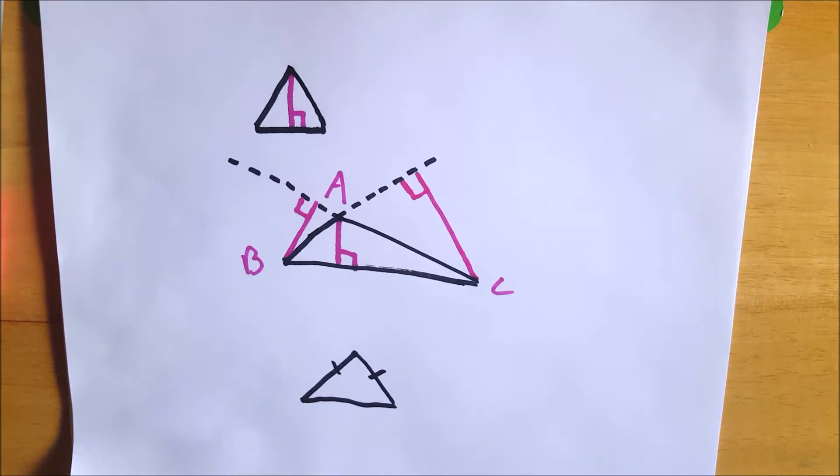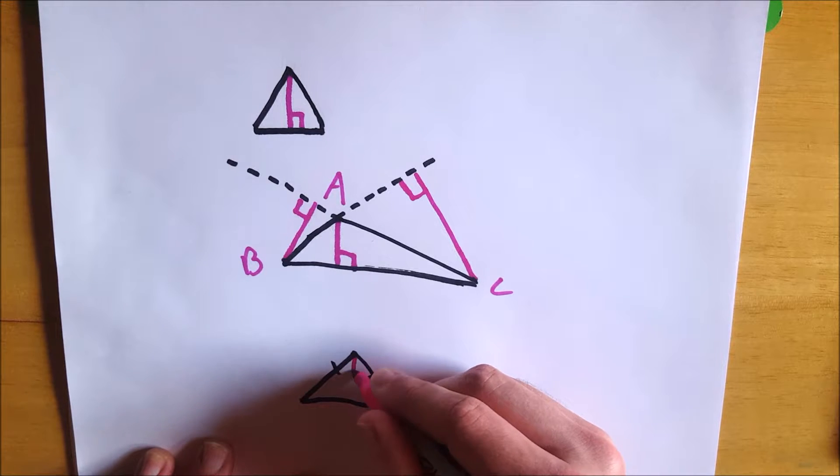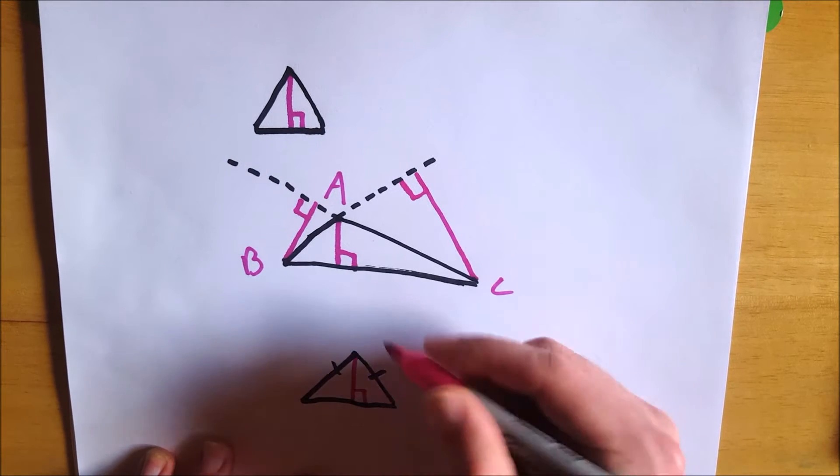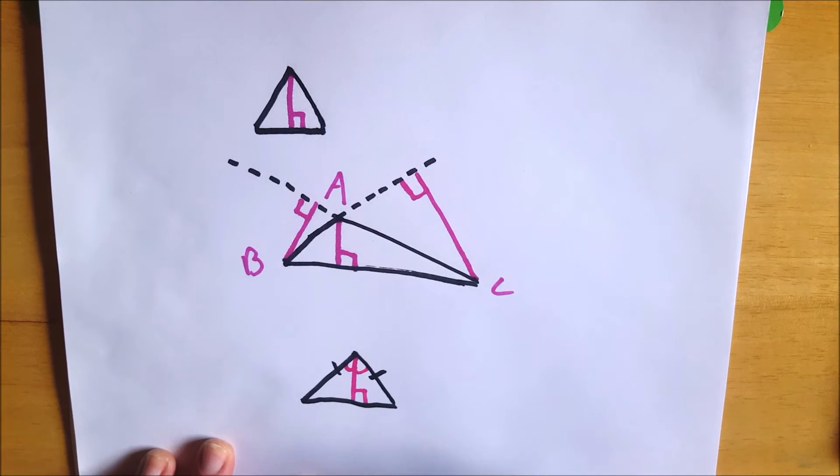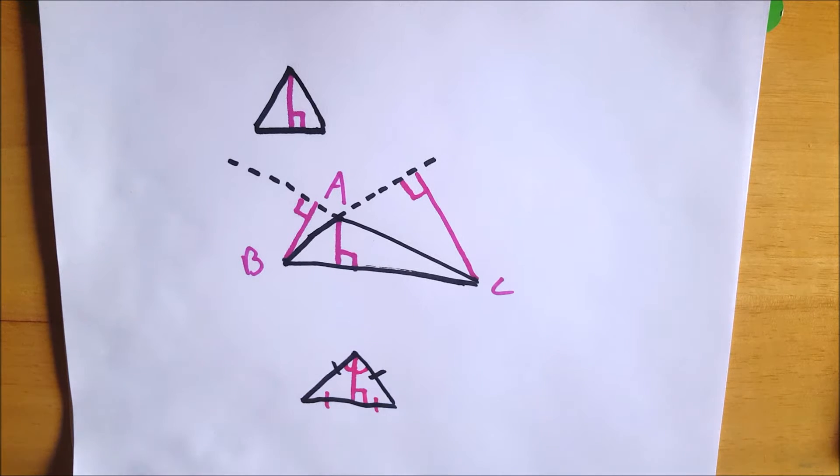In an isosceles triangle, the altitude with an endpoint adjacent to the two congruent sides, so this altitude here, it bisects this angle. So this angle and this angle are congruent. And it bisects this side. So this is congruent to that. So that's important.